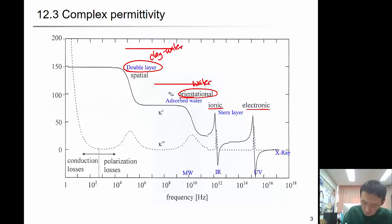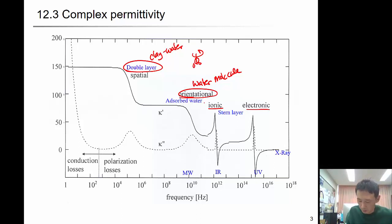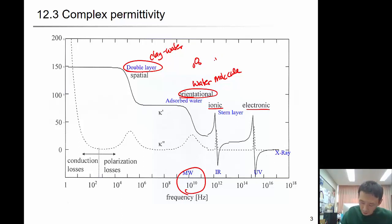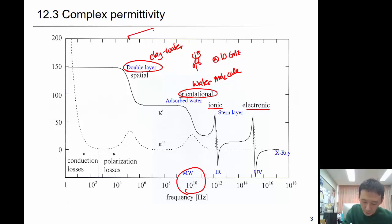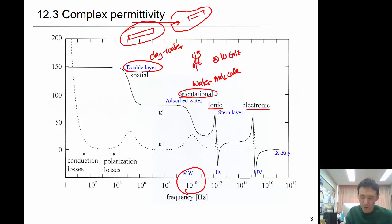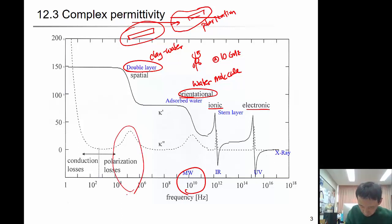This is the water molecule spinning at the orientational relaxation, and the frequency range is around 10 gigahertz. For kaolinite, there is the double layer — a clay particle with water — and this becomes the spatial relaxation or spatial polarization. The range is around megahertz, so around 10 to 100 megahertz.